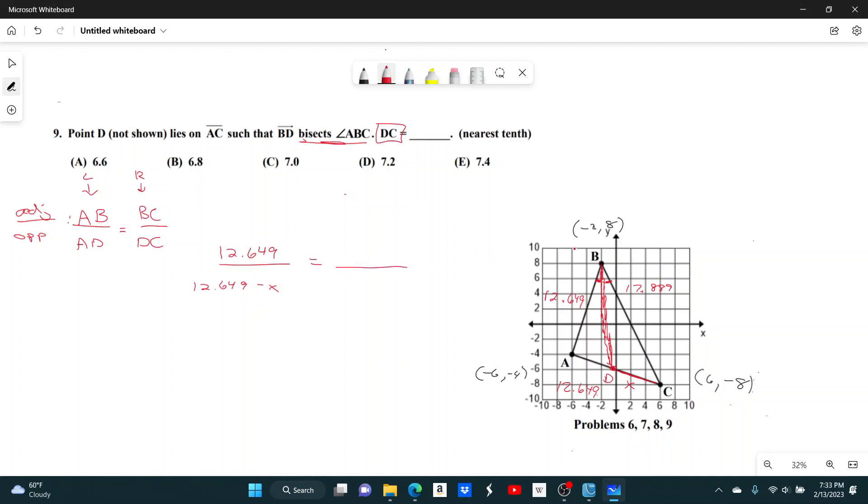And then, is equal to BC over DC. So, what's BC? 17.889, divided by DC, which is what we're looking for, that's going to be X. And now we have this equation. And you could solve this normally, but because we have a calculator, I'm going to take advantage of it.